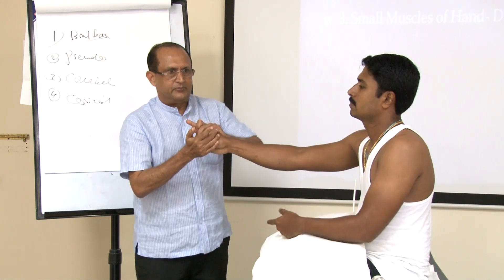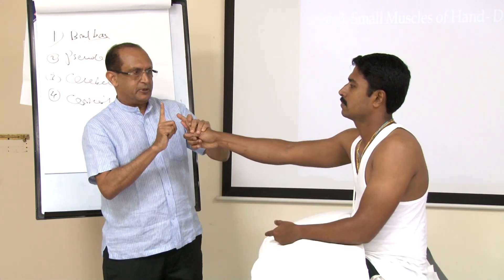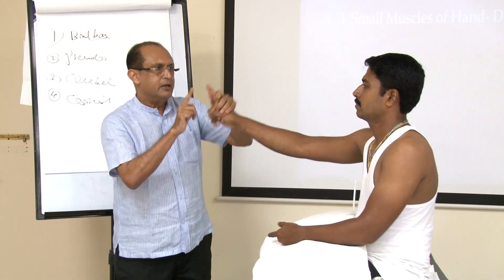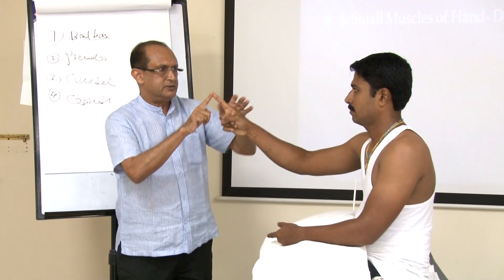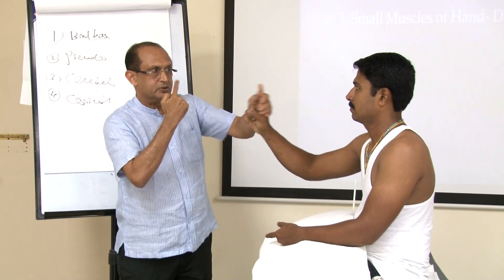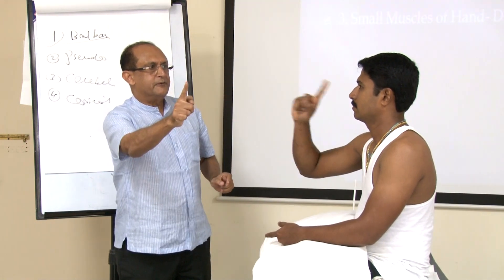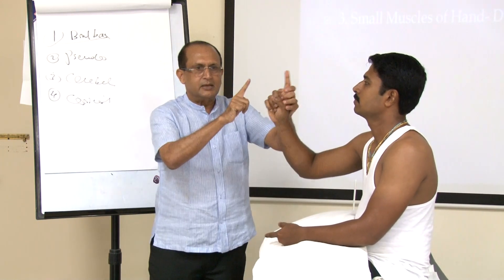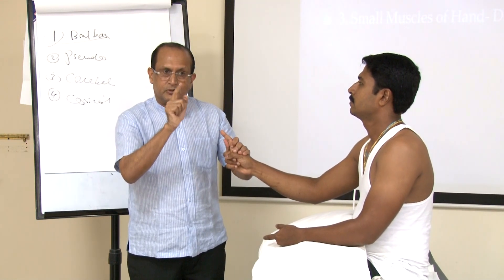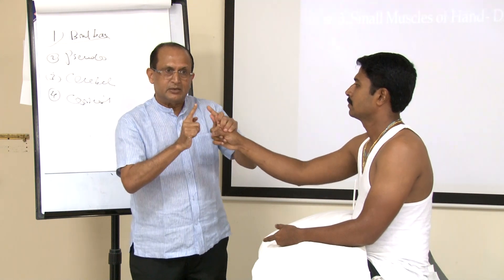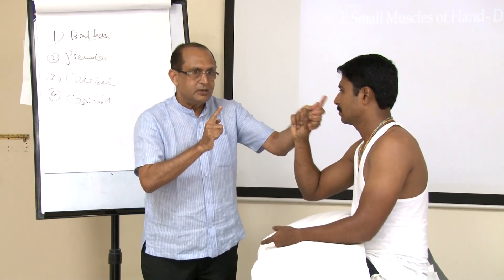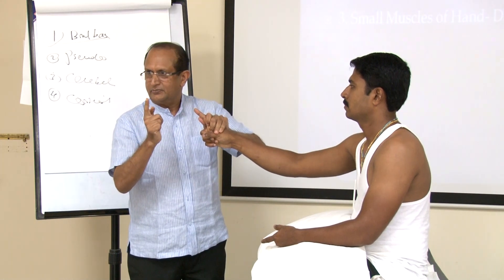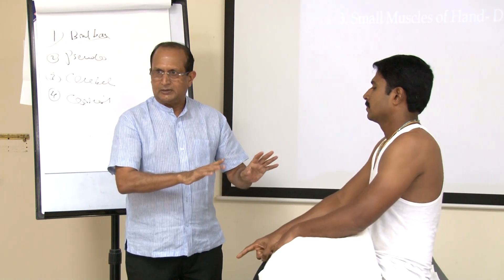For the finger-nose test, keep a full arm's length distance and ask the patient to touch your finger and then the nose. Do it fast with the examiner moving the finger to different positions. During this, you can look for intentional tremor — the tremor of the cerebellum is intentional, occurring at the beginning and becoming maximum at the end. It is an action tremor.